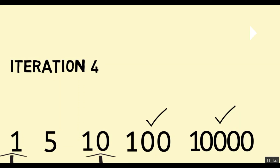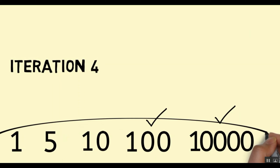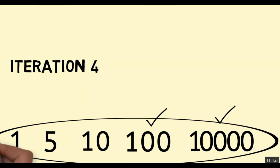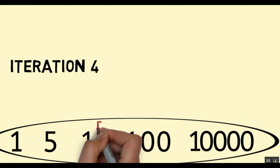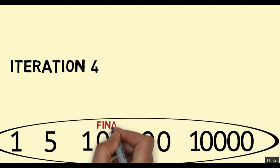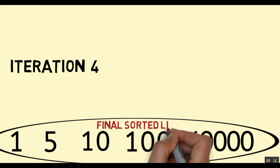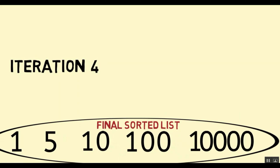So this is our final sorted list and this is how selection sort works. Now we will take a look at the Java code for implementing the selection sort algorithm.